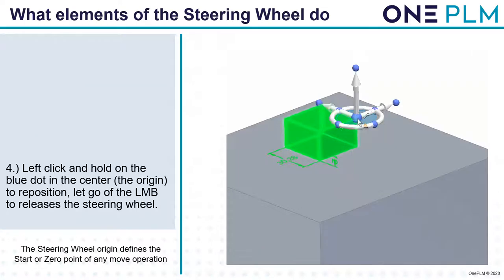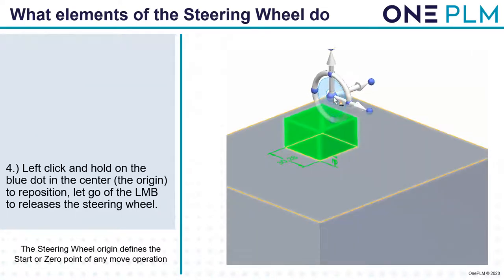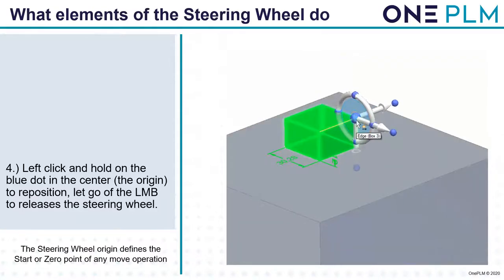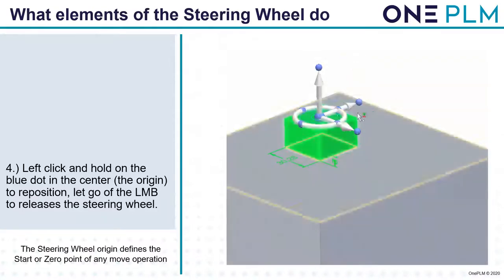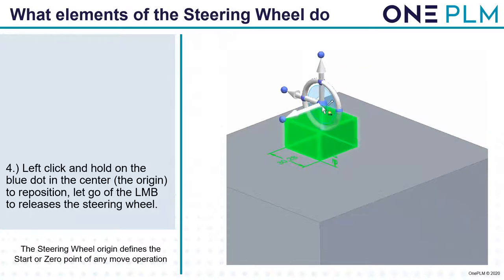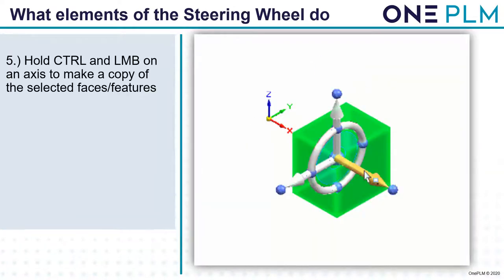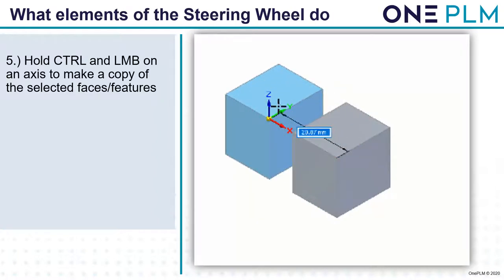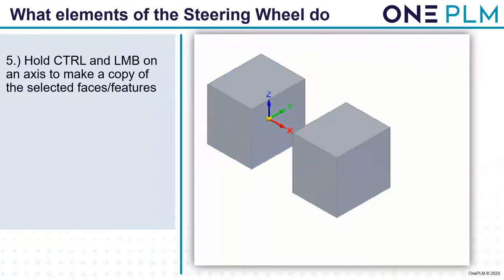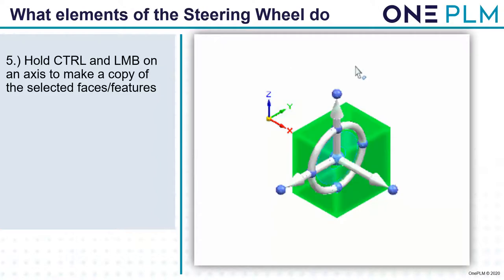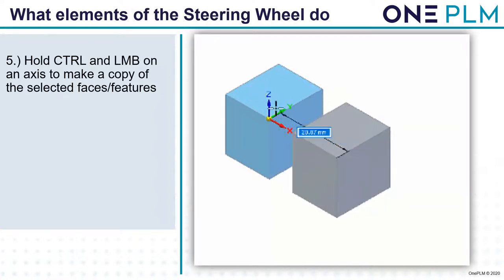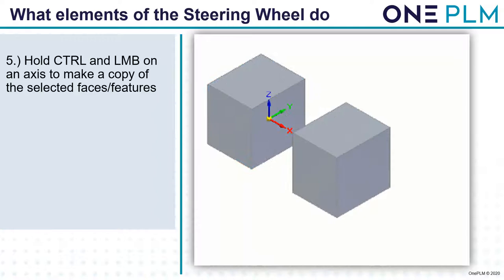When we want to move the steering wheel around we use the large ball in the center called the origin and we can snap this to key points. This allows us to select a feature, move it to our zero position, and then use the arrows to move in the distance and direction we need. We can also use the control button when moving a feature to create a copy — control and left mouse button on an axis makes a copy of the selected faces or features.